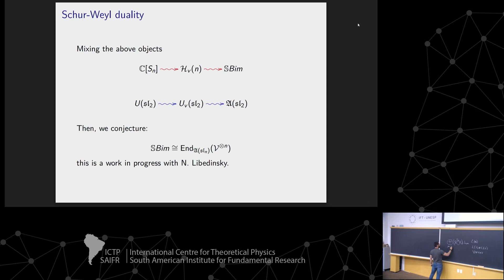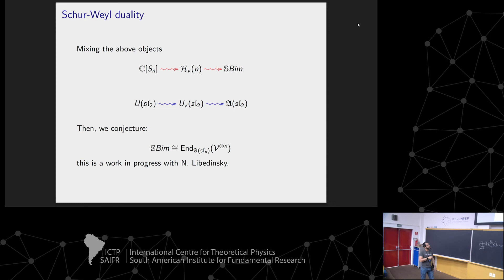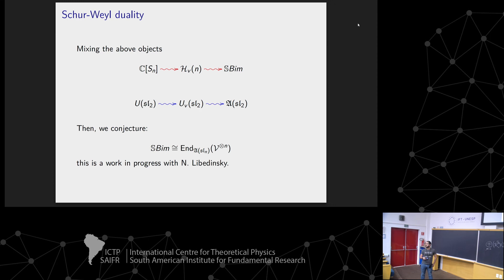This gap category is placed as a 2-representation in this setup, using the notion of endomorphisms of 2-categories given by Rouquier. For SL2 the construction can be shown to work, but the general result is still in progress. The goal is a beautiful three-step categorical formula that categorifies the usual Schur-Weyl duality. That is all, thank you very much.